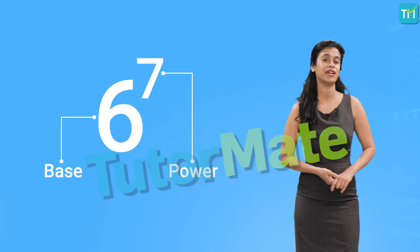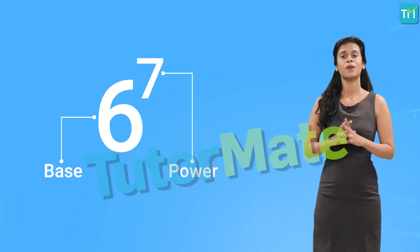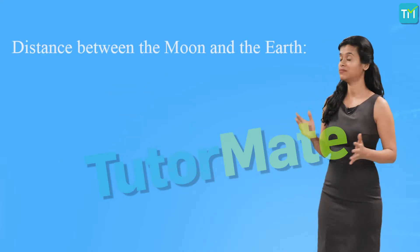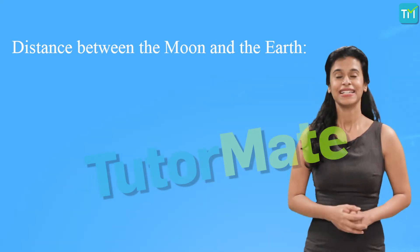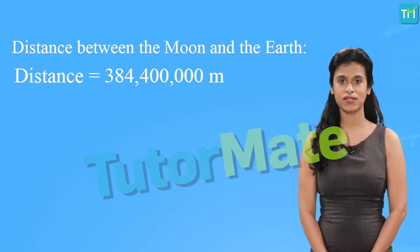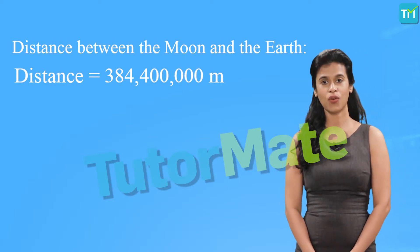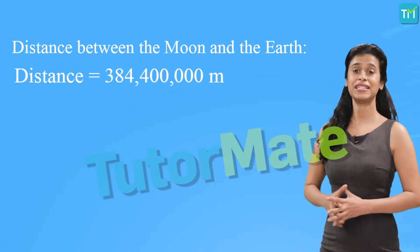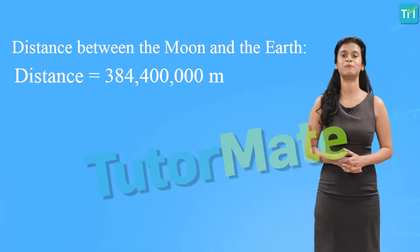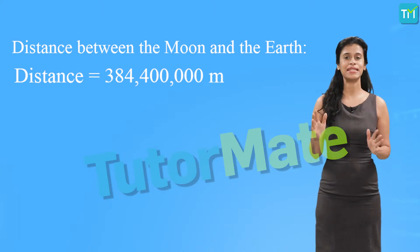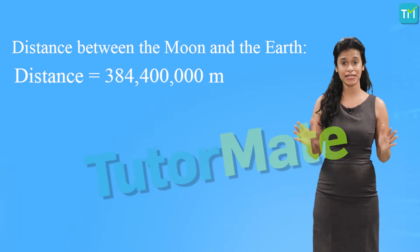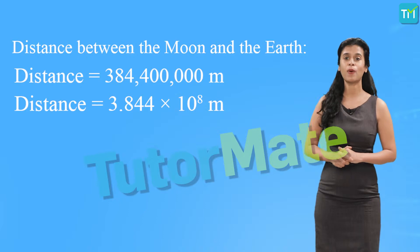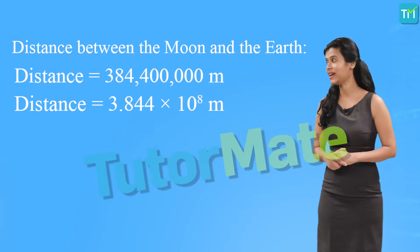Do you remember we talked about various things having different sizes? We know how to express large numbers like the distance between the moon and the earth. The distance between the moon and the earth is 384,400,000 meters or 384,400 kilometers. That's a big huge number, isn't it? It is tedious to write down such a massive number as it is. Hence, it is expressed in terms of power as 3.844 into 10 raised to 8 meters.